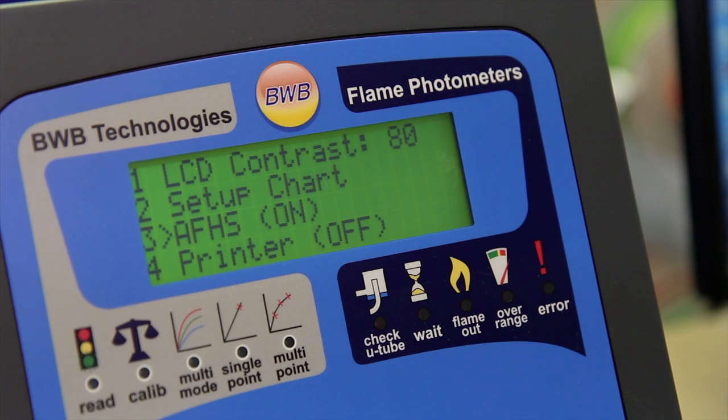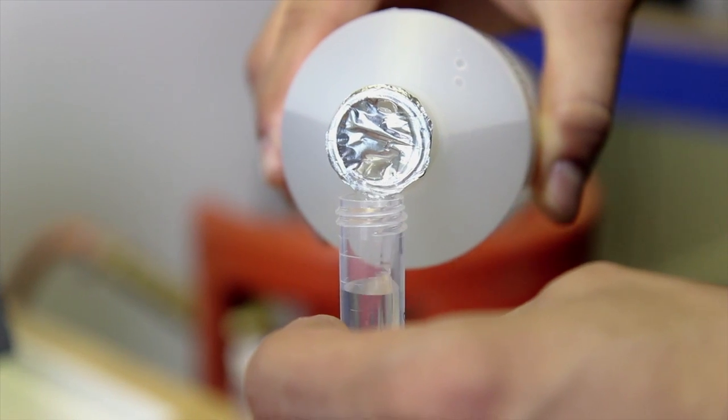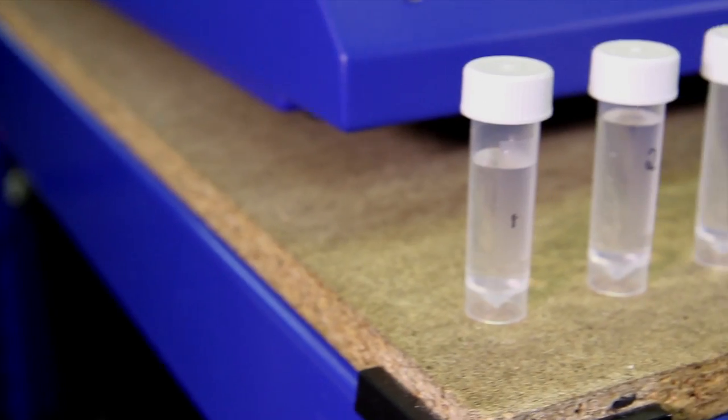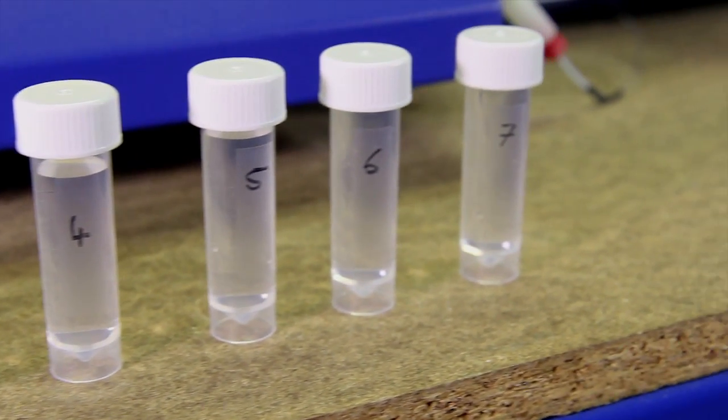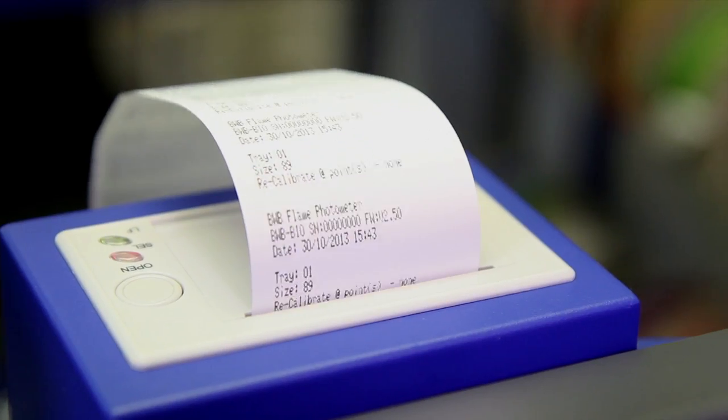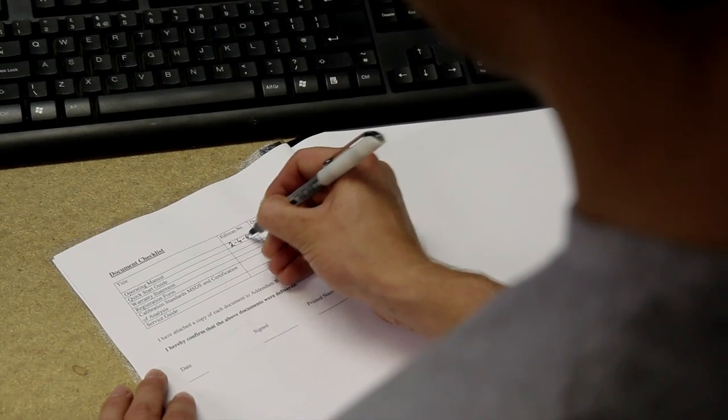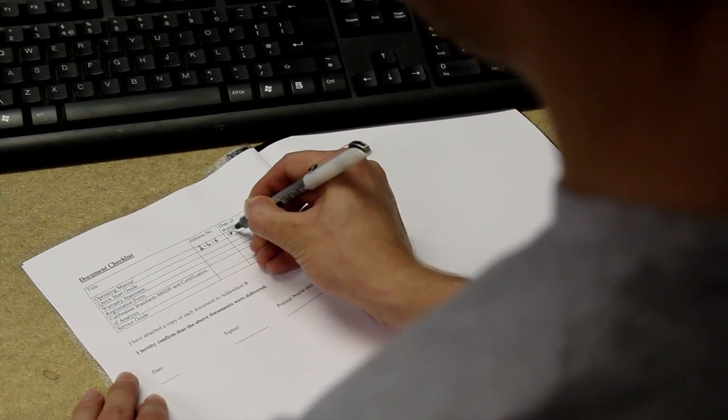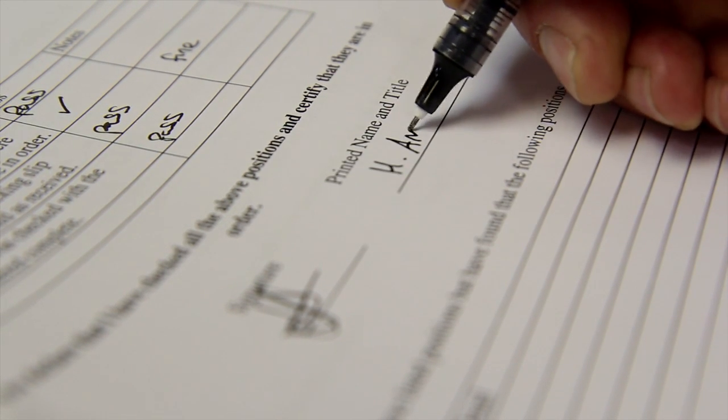The performance qualification has been designed to ensure that the instruments perform to the original factory specifications. Once the IQ and OQ sections have been completed, the user will run a sample tray with the provided numbered files and solutions, print out the results and send the results to BWB for analysis. After completion of the qualification and confirmation from BWB, a signed certificate will be issued to the user.